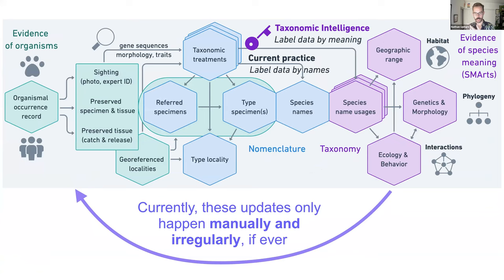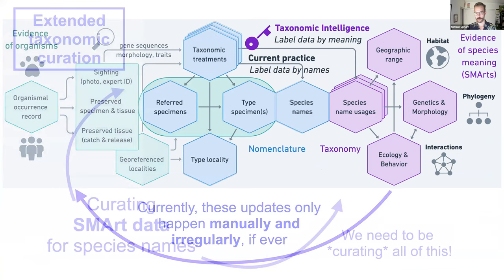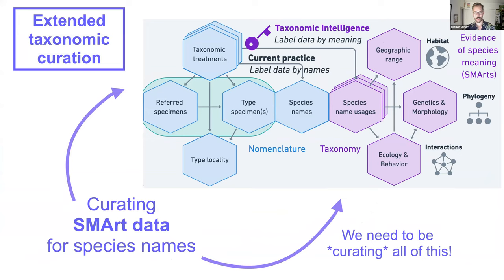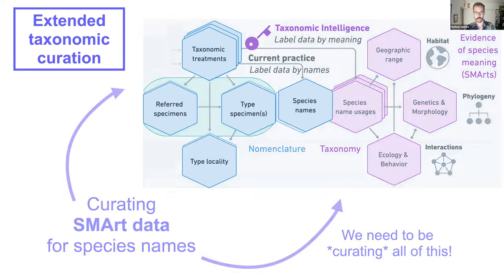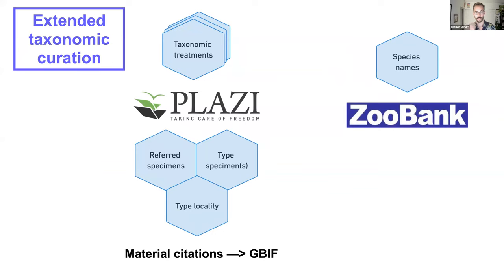Currently there's really no feedback loop between observations and species name usages — it happens irregularly if ever, and generally manually. The idea of extended taxonomic curation focuses on how we use that SMART data and really start curating it relative to changes in taxonomy to update taxonomic labels on biodiversity data. There have been awesome efforts curating taxonomic treatments and digitizing them, with specimens being fed directly into GBIF.